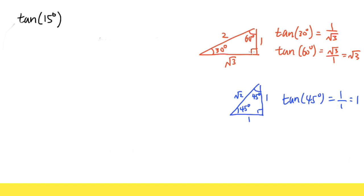The first one is the 30-60-90 special right triangle, and the ratio of the sides: the shortest side is 1, the hypotenuse is 2, and the other side is square root of 3. From this triangle we can figure out tangent of 30 degrees. Looking at the 30-degree angle, tangent is opposite over adjacent, so it's 1 over square root of 3.